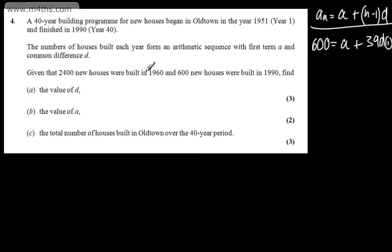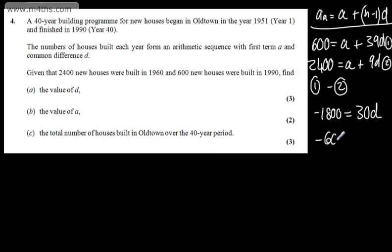If we look now, we have 1960. 1960 is going to give me the 10th term. So 2400 is equal to A plus 9D, and I'm going to call that equation two. If we do 1 minus 2, we can eliminate the A's. So subtracting downwards, we're going to have negative 1800, and that's equal to 30 lots of D. Dividing both sides by 30, that gives us D is negative 60. So the common difference is negative 60.